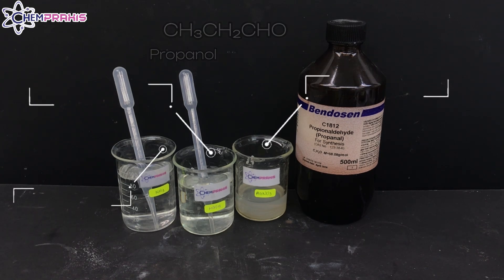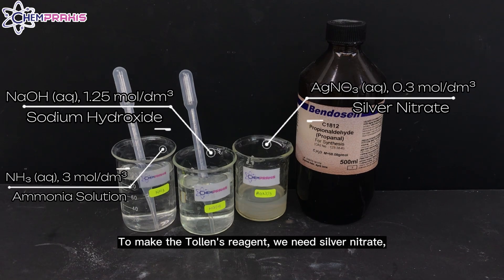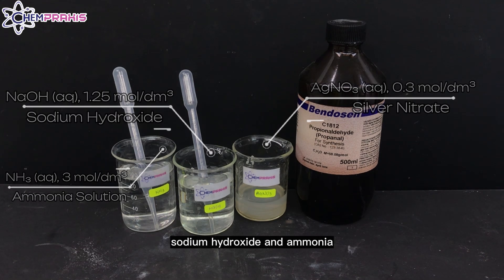Here, we have some propanol. To make the Tollens reagent, we need silver nitrate, sodium hydroxide, and ammonia.